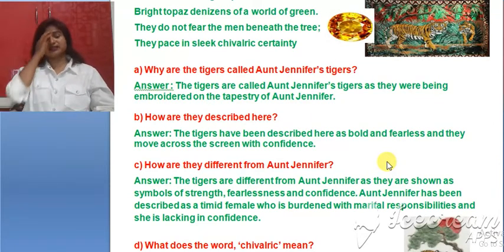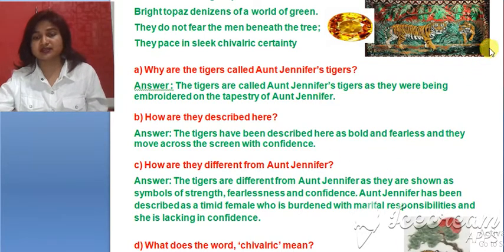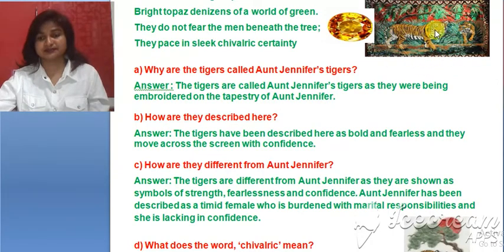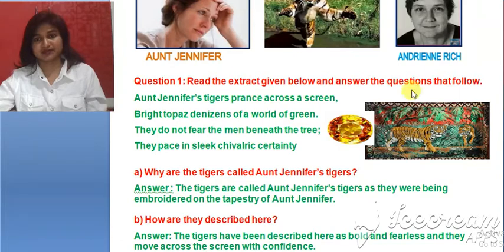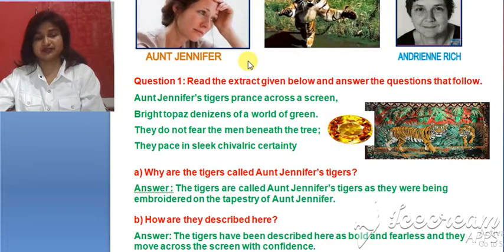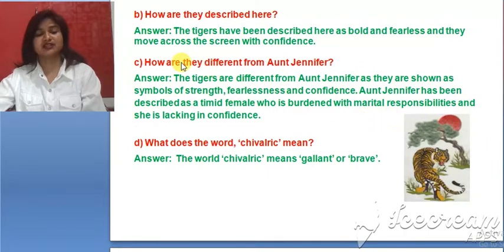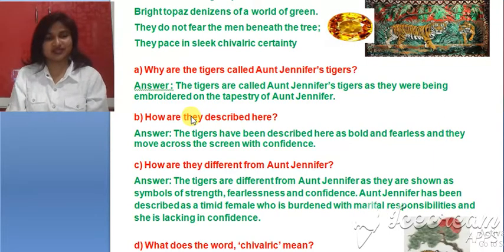Aunt Jennifer created pictures of tigers, which are symbols of bravery, boldness, and confidence — they do not scare even if a person stands under the tree. Aunt Jennifer herself wished to live like a tiger but was scared of her husband. The poet Adrienne Rich describes the pathetic condition of women all over the world. Dear scholars, read and learn. See you later — God bless you.